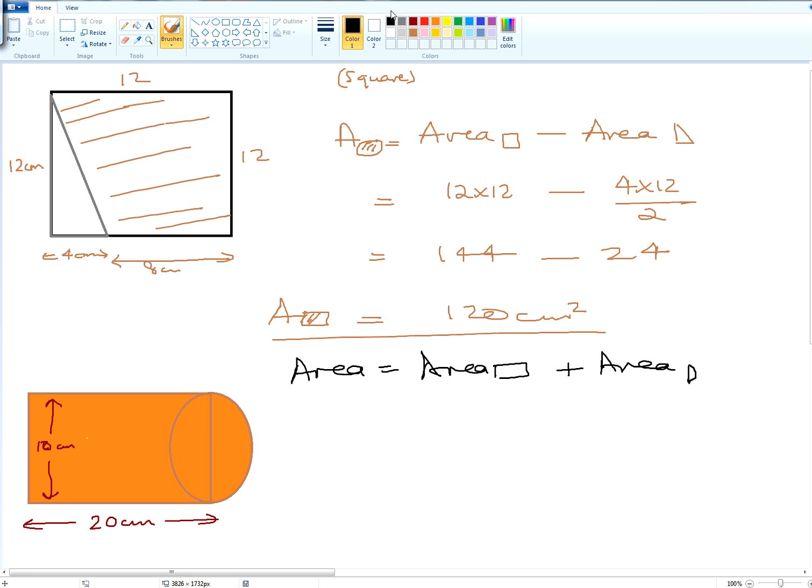We're going to work out the area of the rectangular bit, which is length times width, and the semicircle part, which is pi times radius squared divided by 2 because it's half a circle. Let's put the values in. What's the length of the rectangle?